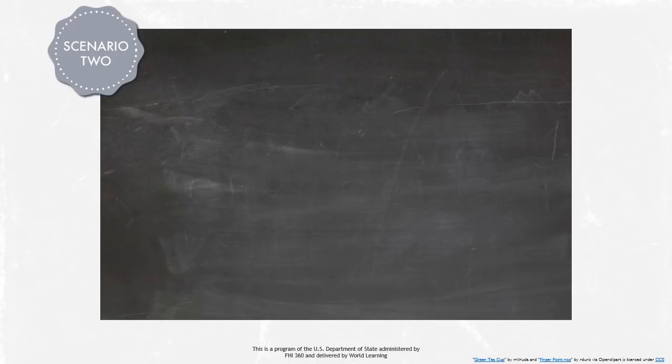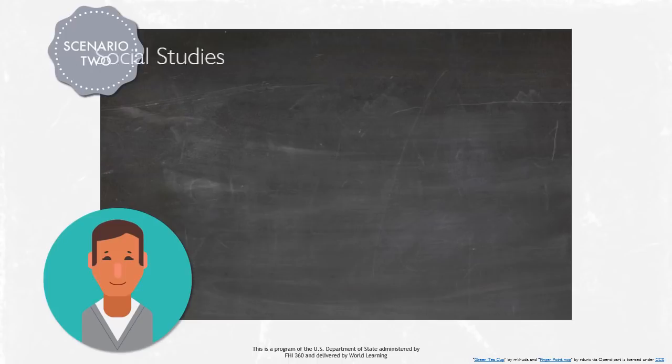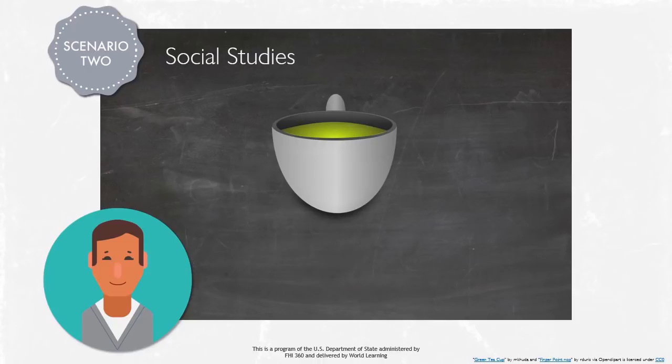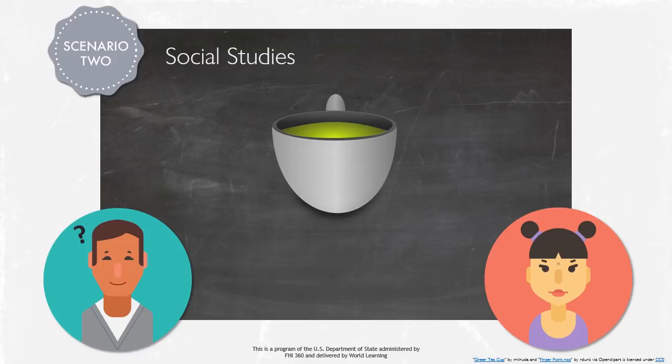Scenario 2. In Nooradin's social studies class, one of his students mentioned green tea. But at first, Nooradin did not understand the student. The student seemed very frustrated that the teacher did not understand what she was saying, especially given that green and tea are two very common and basic words in English.